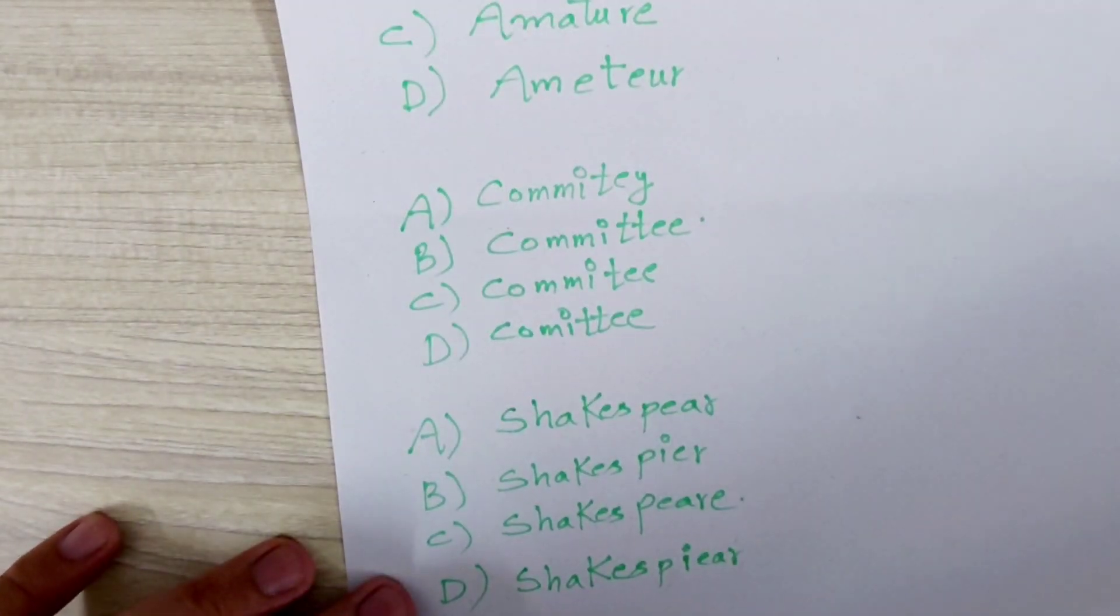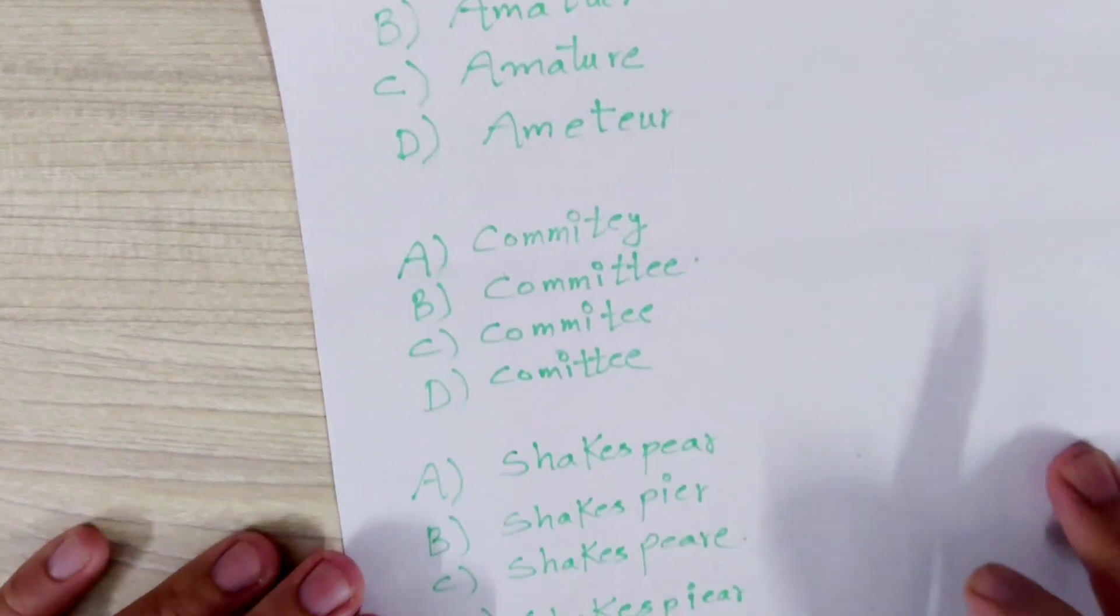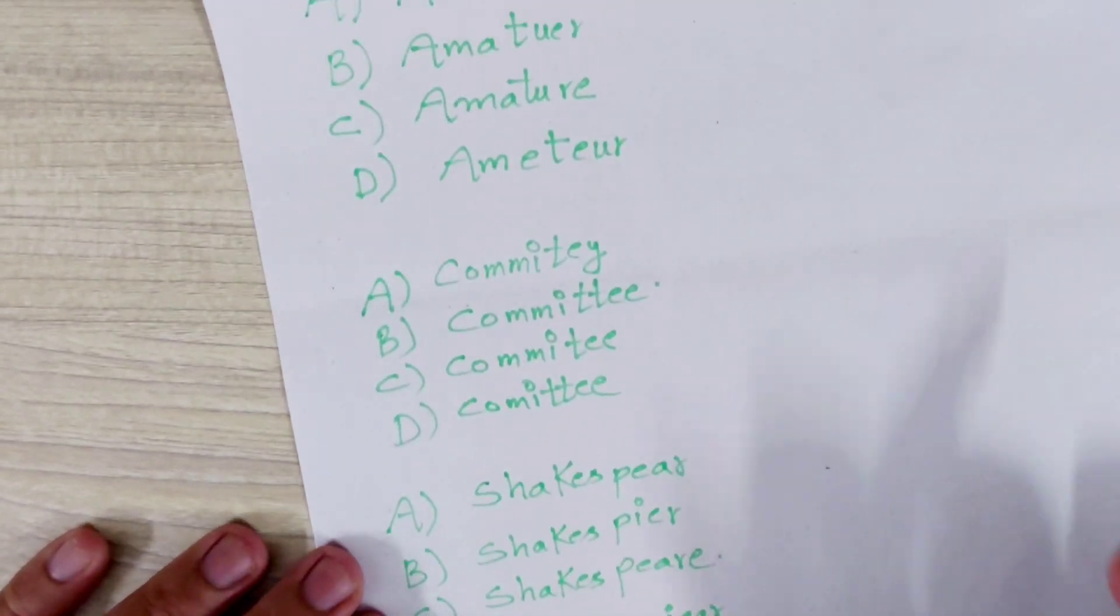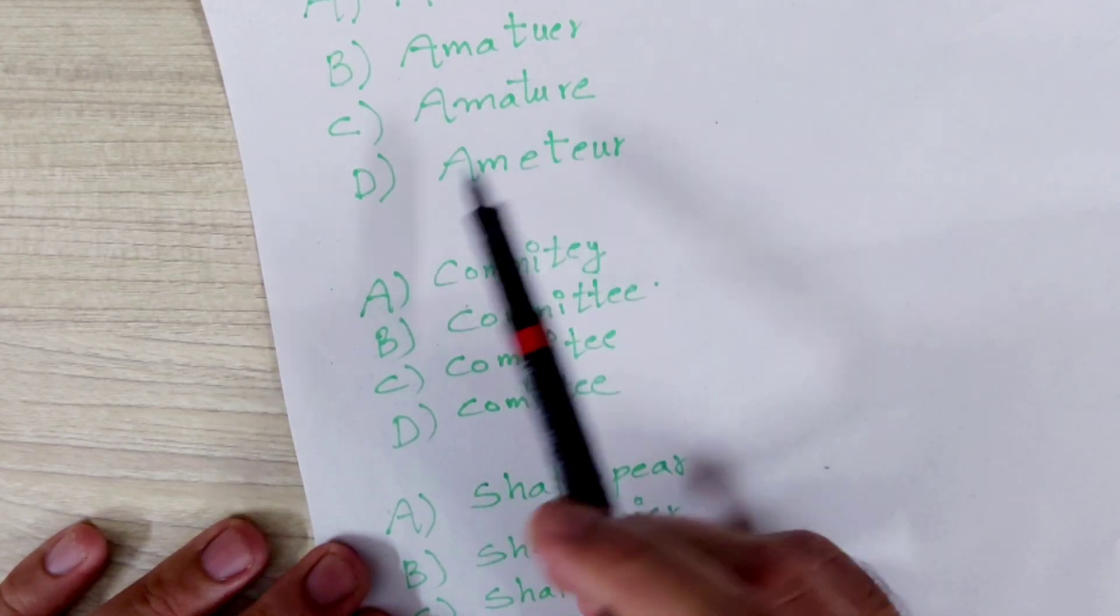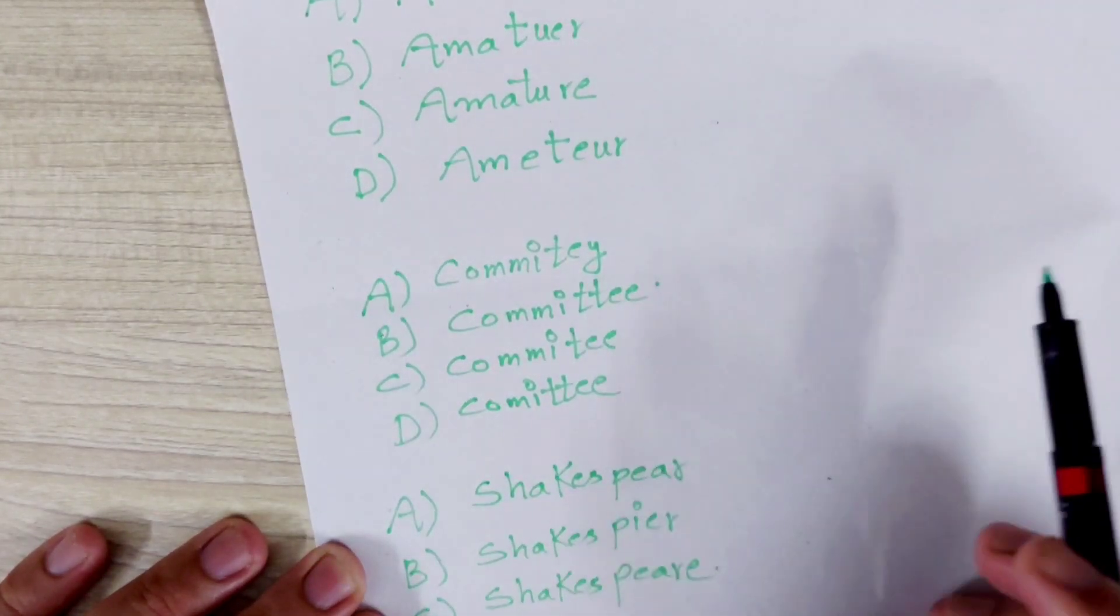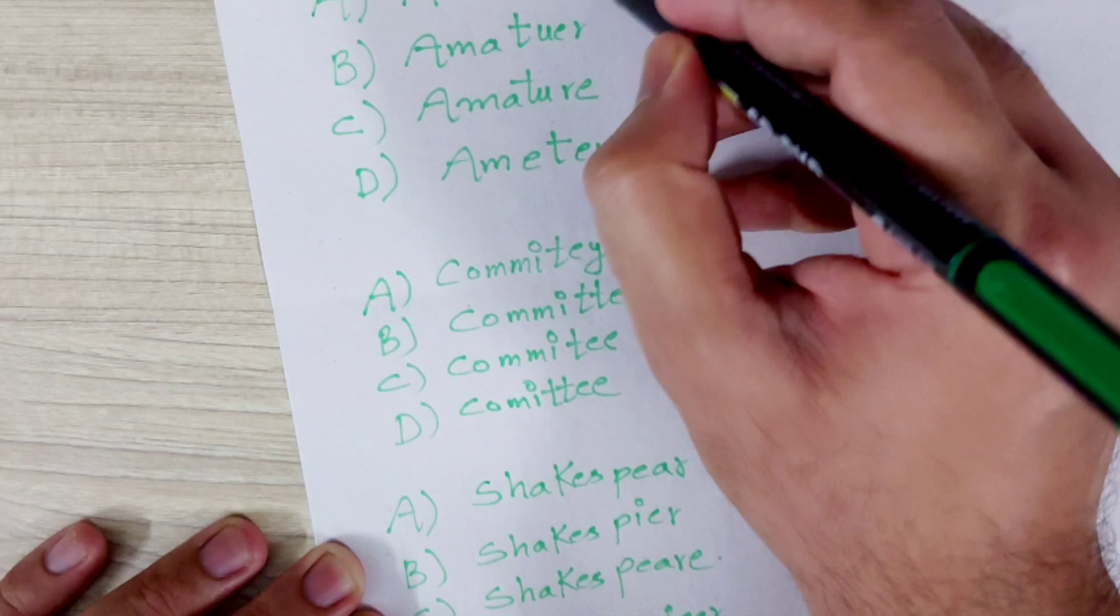Now you have to identify the correct spelling. Like a few options will be there with some options like amateur, amateur, amateur, amateur, amateur. So what's the correct answer? Tell me. This one, obviously.